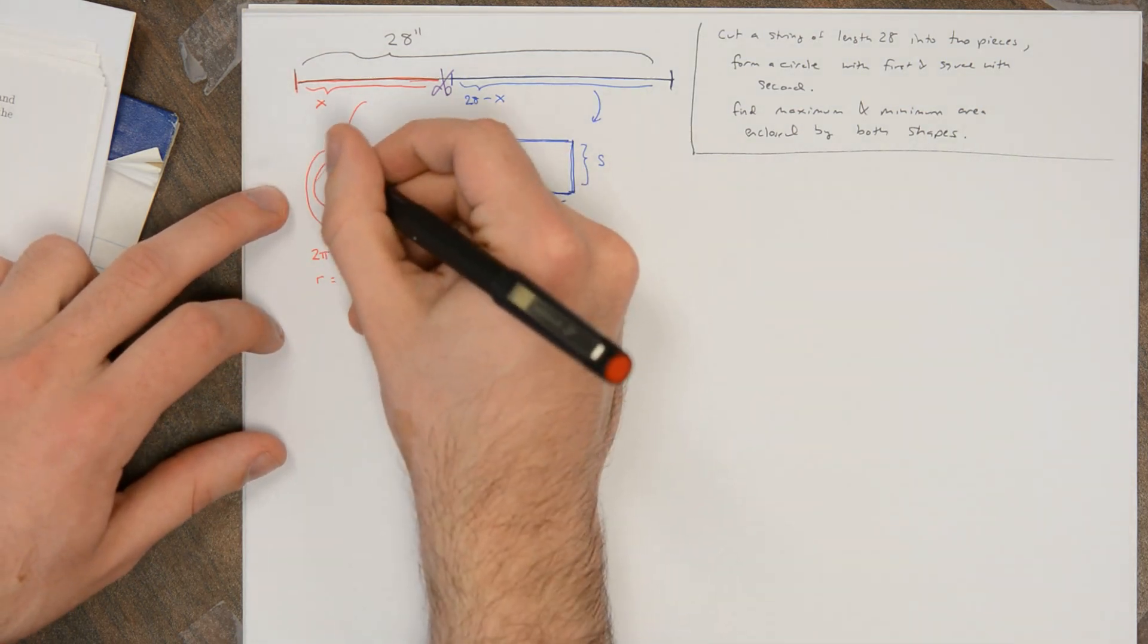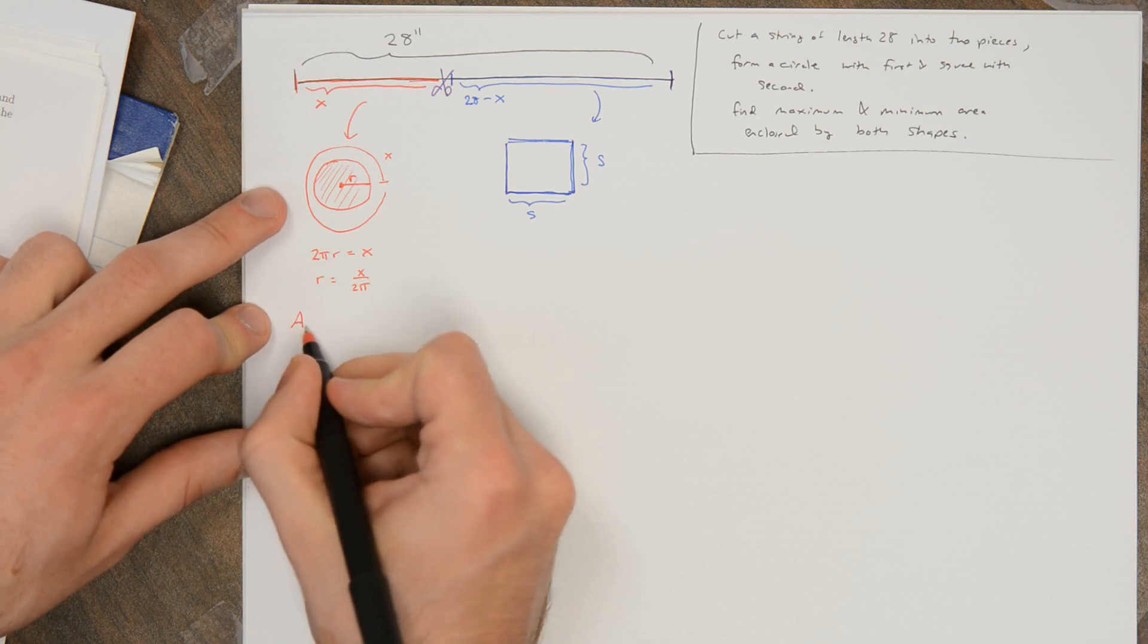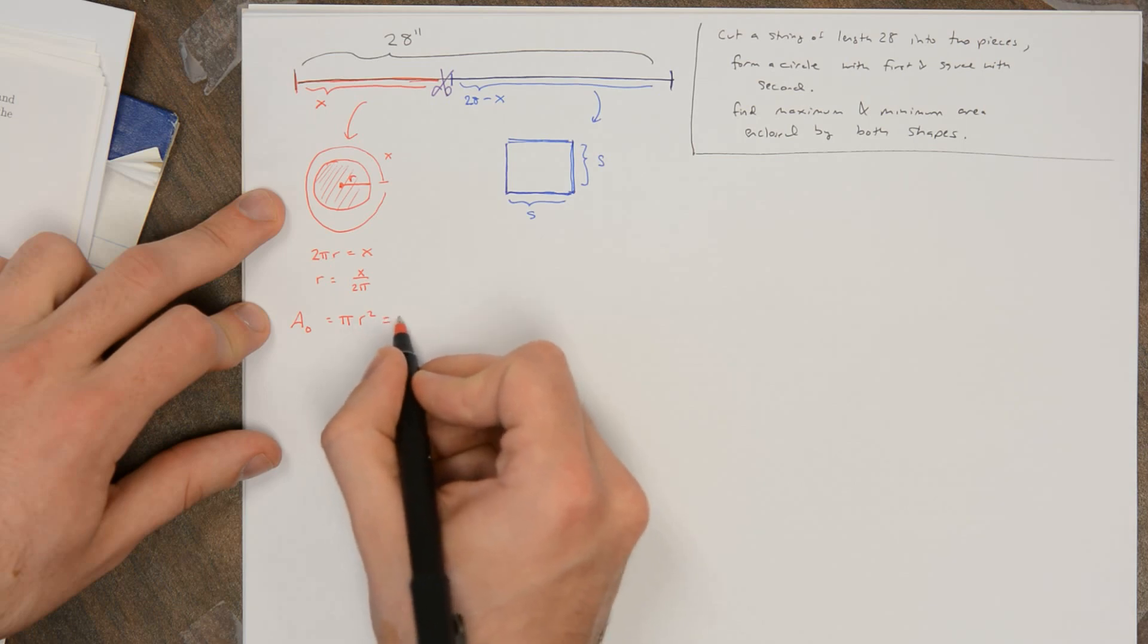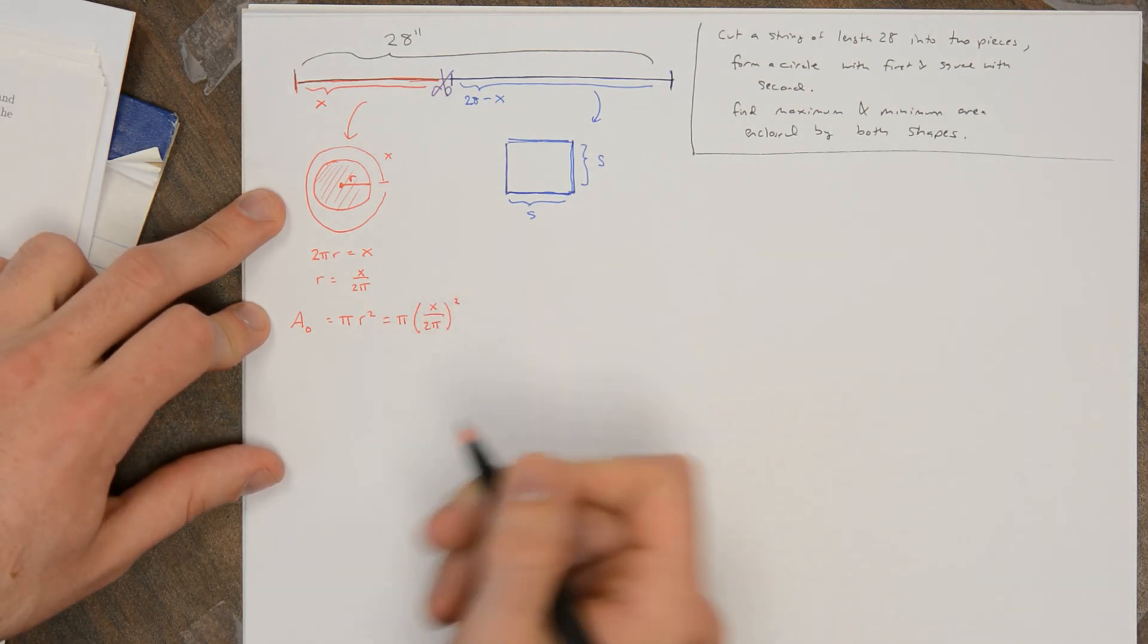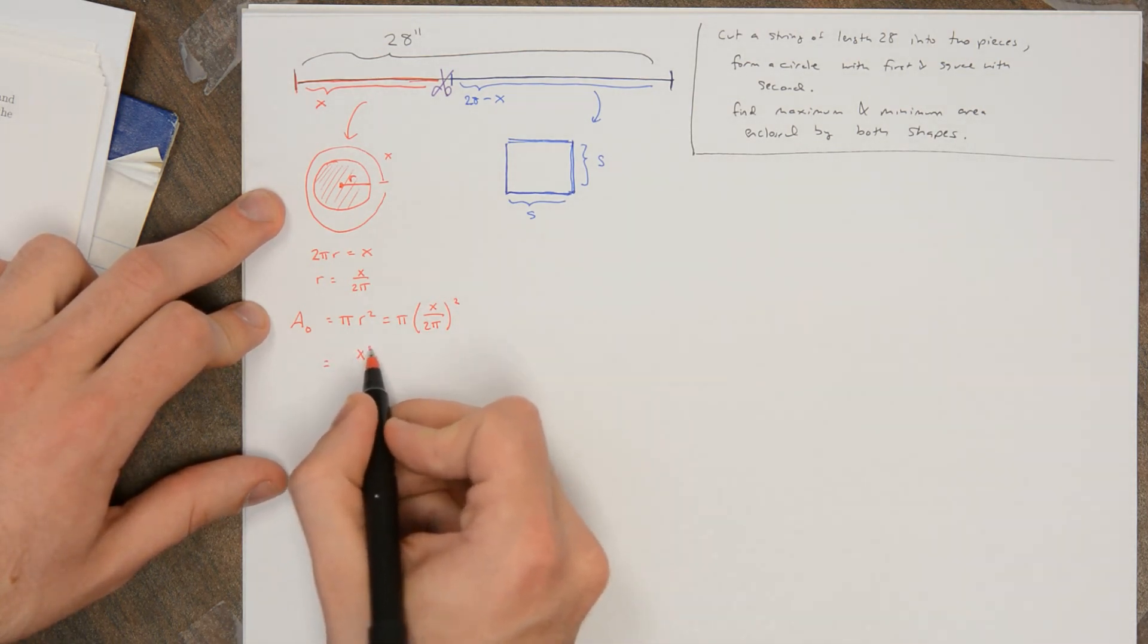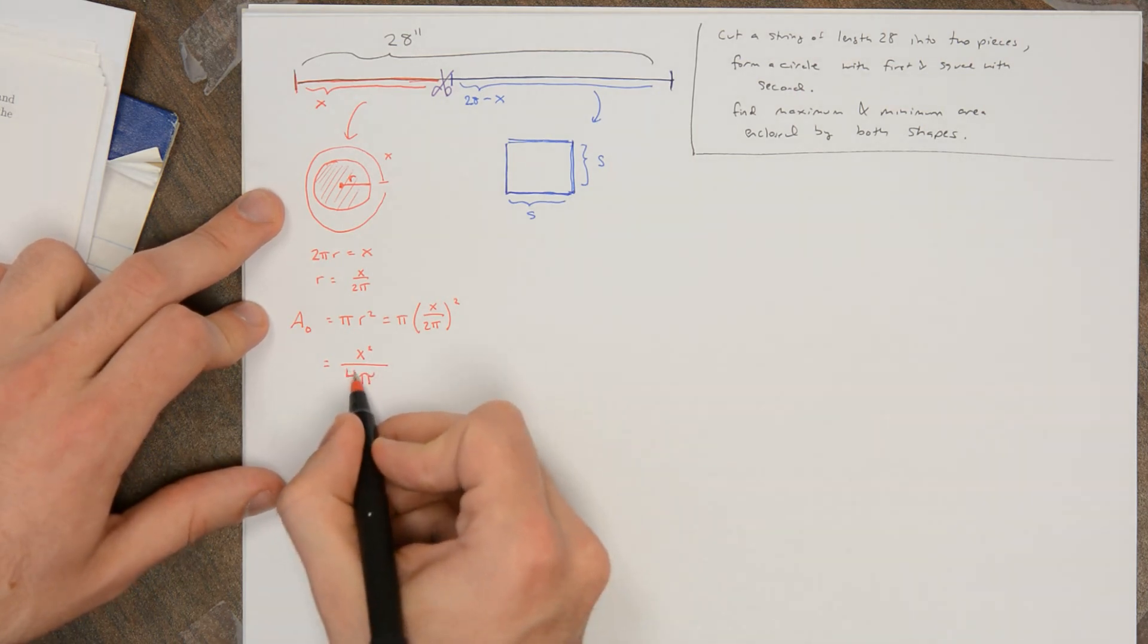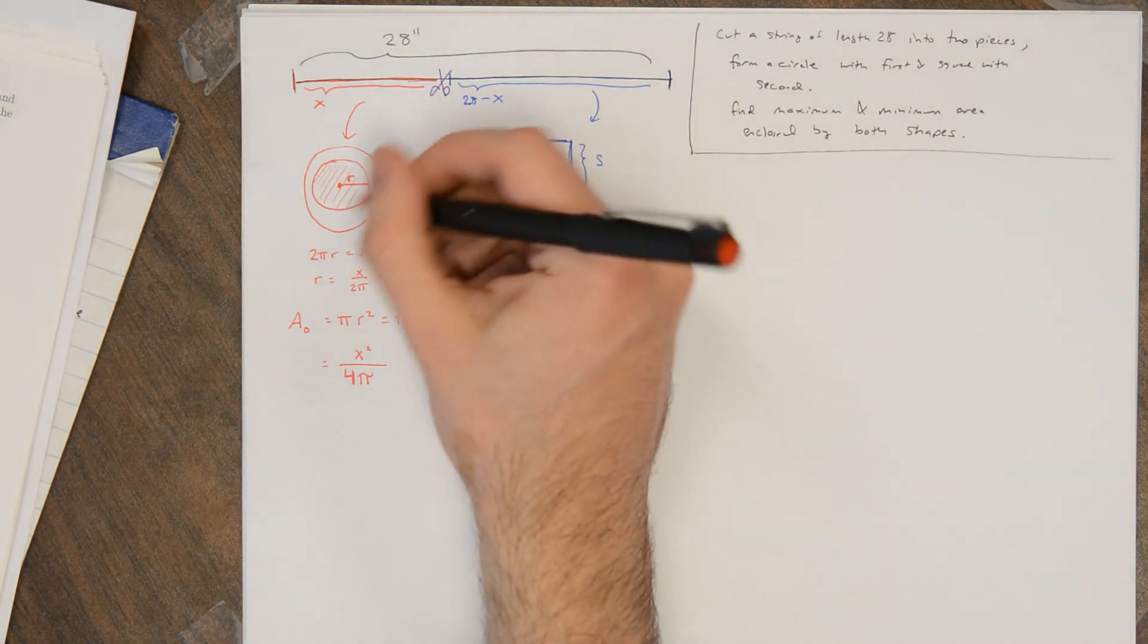And so the area of the circle, which I'm going to call A₀, is going to be πr². So that's going to be π(x/2π)². So that's going to be x². A π is going to cancel from top and bottom, and I'm going to be left with 4π in the denominator. So that's the area of the circle.